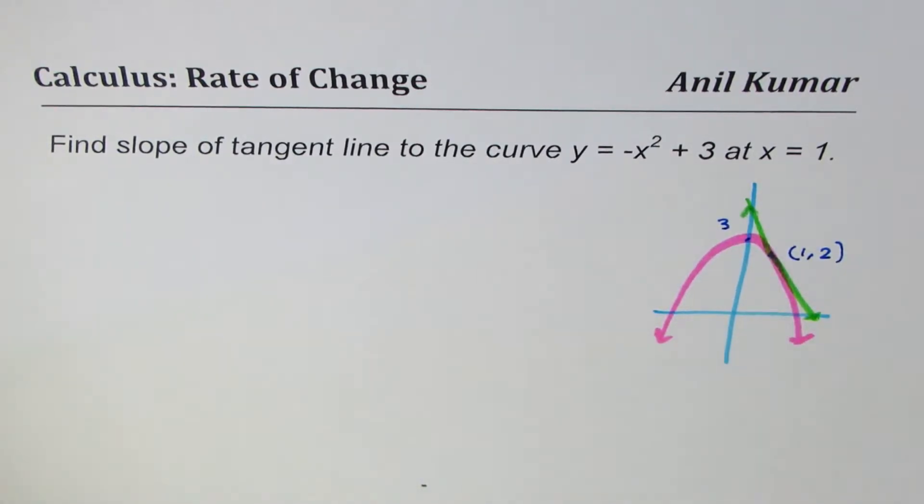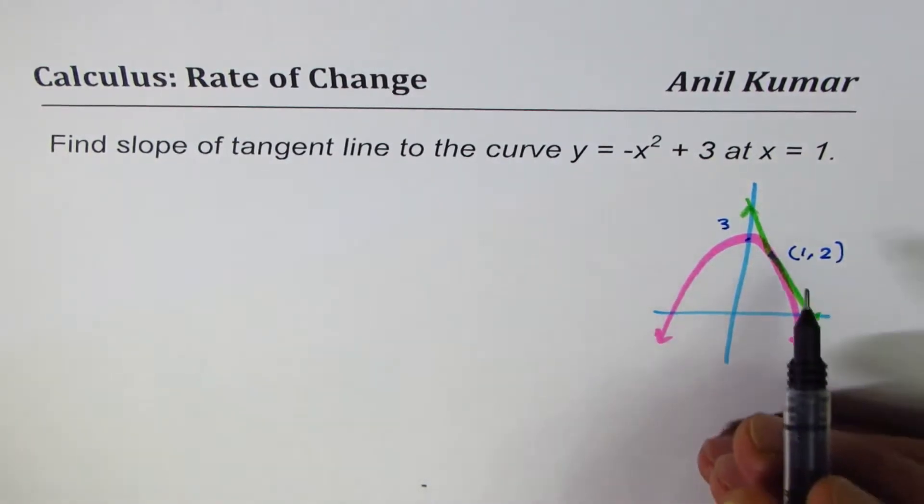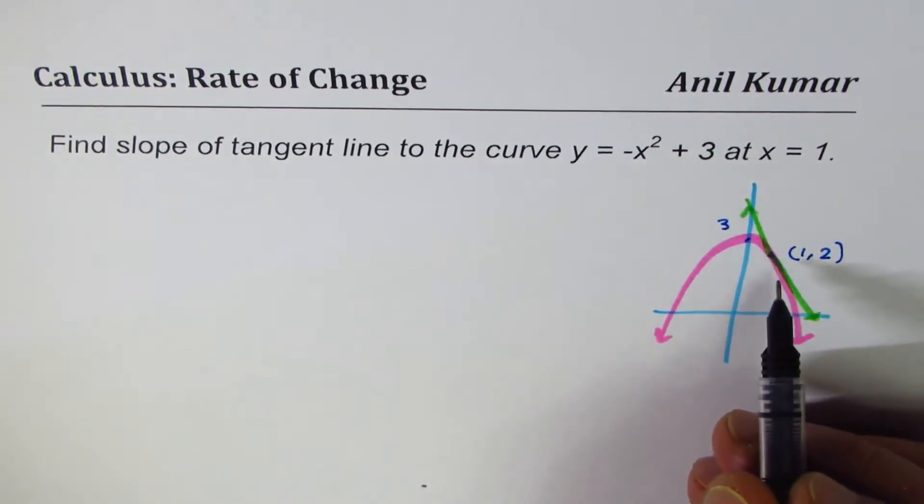You can see very clearly you expect a negative answer. Now we will apply difference quotient formula to find the slope of this tangent line.